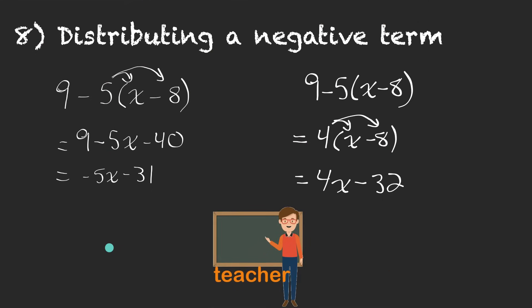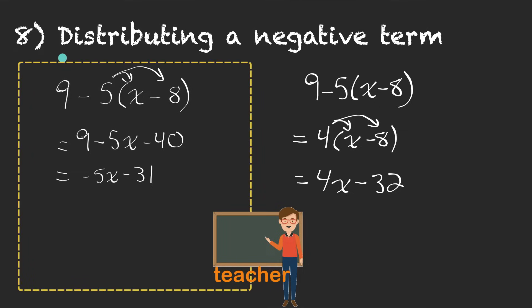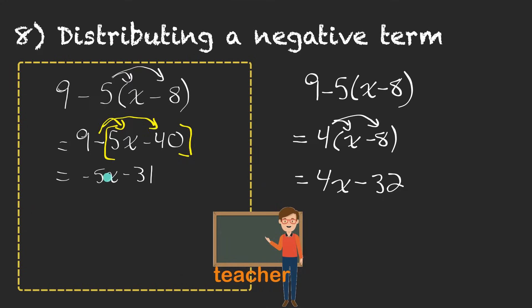Both of you actually just made one small mistake having to do with order of operations. Student number 1 on the left — you shouldn't have just distributed the 5. You should have distributed a negative 5 if you were wanting to get rid of the brackets all at once. If you did it the way you did it, this product would still have to be in brackets, and you'd have to remember to subtract both of these, making this constant term wrong. We'd be subtracting negative 40, which means plus 40, so you'd have 9 plus 40, which is 49. So you'd have negative 5x plus 49, not negative 5x minus 31.